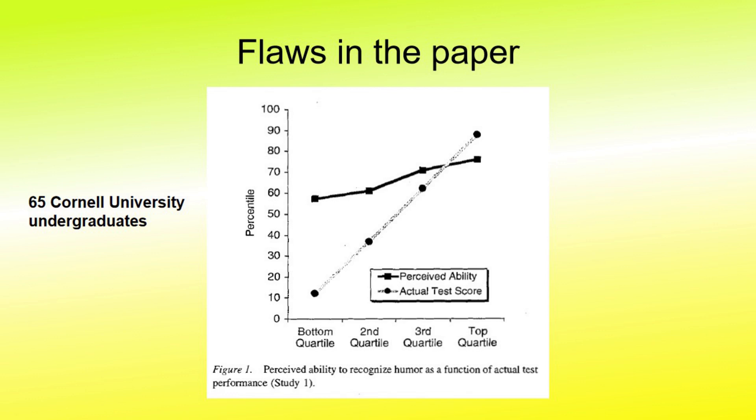Furthermore, among their friends, who probably have a similar sense of humor, they may actually be considered rather funny. Another problem is the fact that this particular study is based on only 65 Cornell University undergraduate students. They are not exactly a representative sample of the human race.